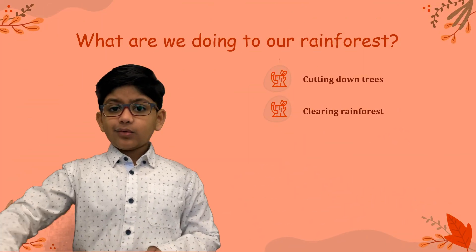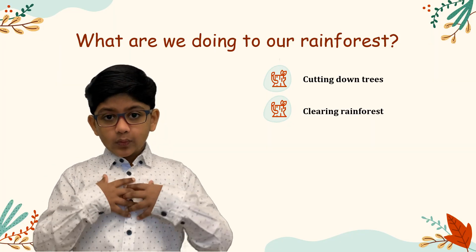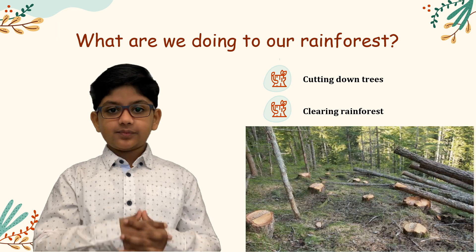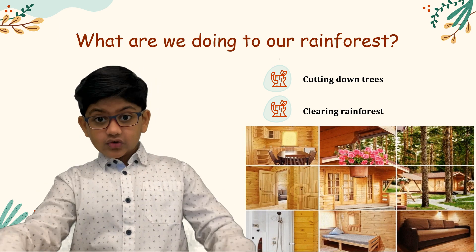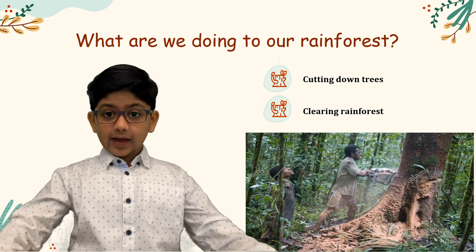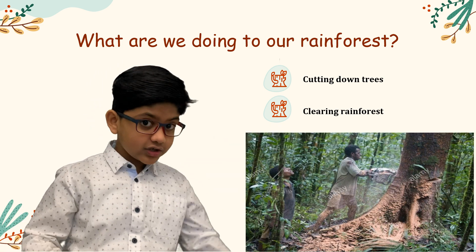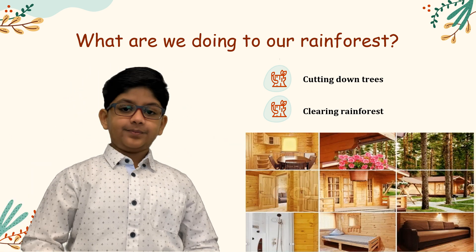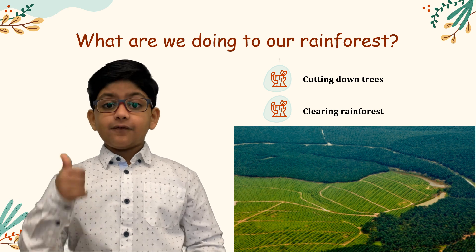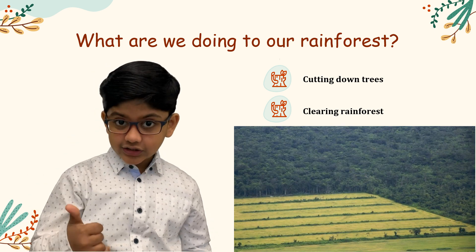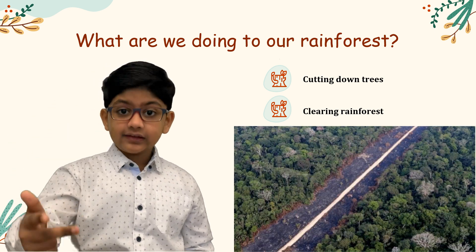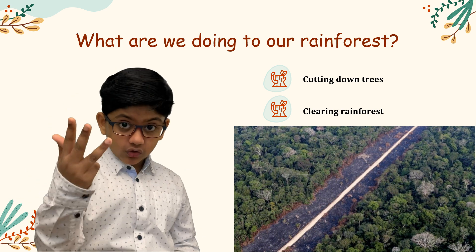Now let's see what we are doing to our rainforest. We are cutting down trees to make various products like furniture and paper. Vast areas are cleared for agriculture, cattle ranching, expanding cities, and laying new roads.